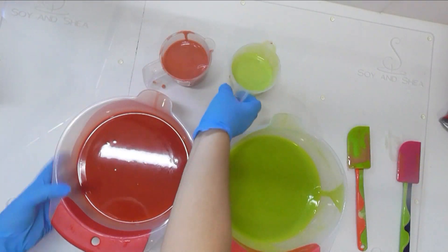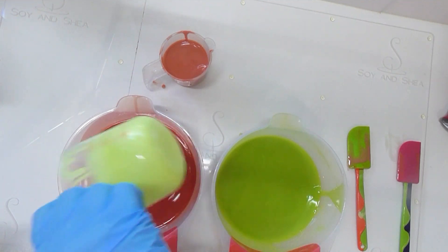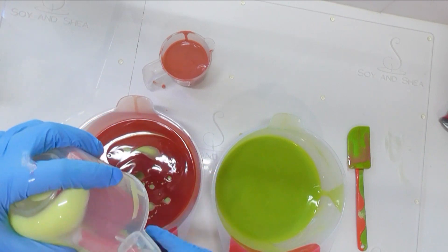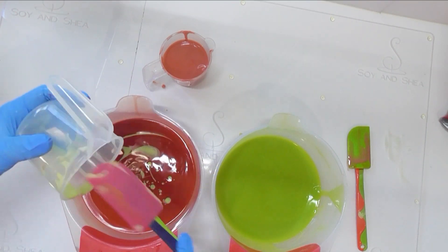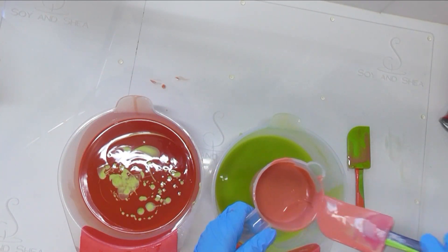Alright, now that I've got all of that mixed together I'm going to take my light green and I'm going to do an in-the-pot swirl in there. Let's get that scraped out because we don't want any of that left over, and I'm going to do the same with the red but pour it into my green.